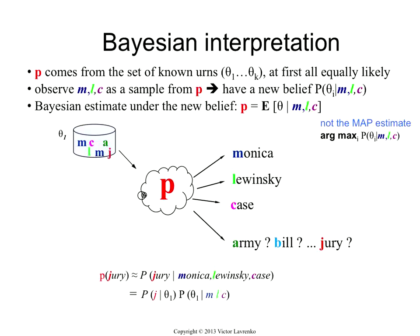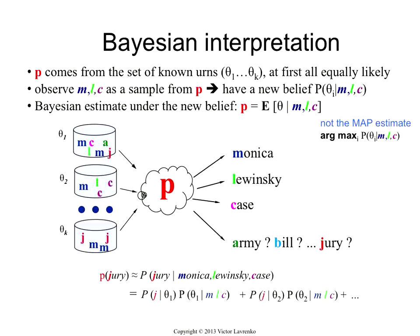I just take P(jury) given that P was the first urn in the dark room. And what is the probability that P was the first urn? Well, that's just the posterior probability of theta one, given that 'Monica Lewinsky' and 'Case' were sampled from it. Of course, it could also be the second urn — so then I have the probability of jury under the second urn multiplied by the belief, and the belief is the posterior of the second urn, assuming that you saw 'Monica Lewinsky' and 'Case' sampled from it. You repeat it for all M urns, and you end up with that expectation — the same as on the previous slide.